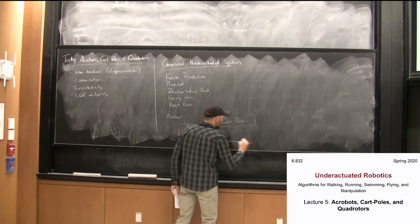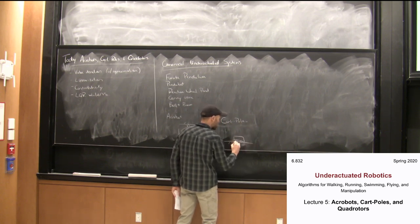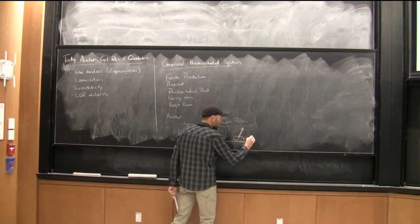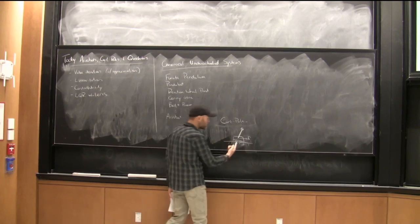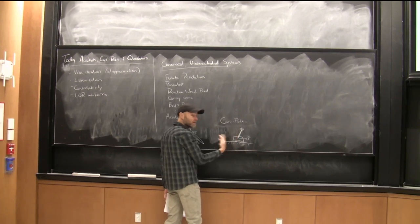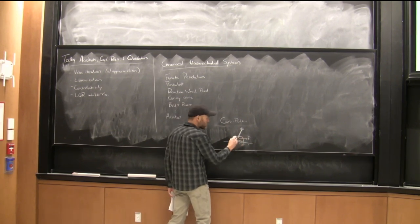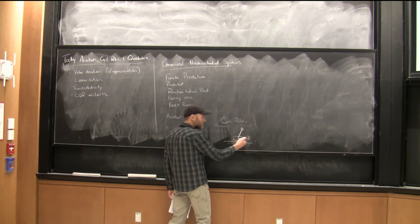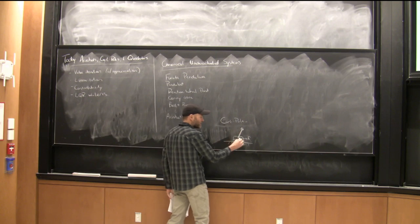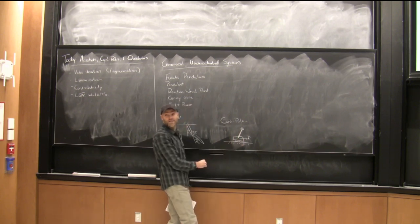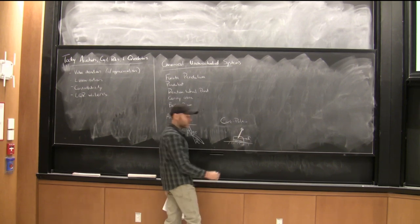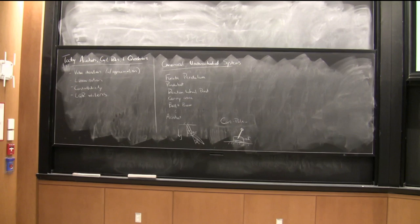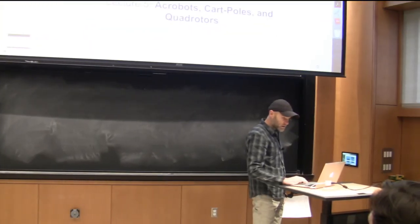The cart-pole system—some people just call it the pendulum. We use it in intro controls courses, but typically only look at linear control at the top. In this class we'll think about the whole nonlinear dynamics. We have a cart on rails with an applied force, like a double integrator base, but with a pendulum attached. Because we didn't have enough research funding, nobody gave us a motor to control the pendulum, so we have zero torque there—trivially underactuated.